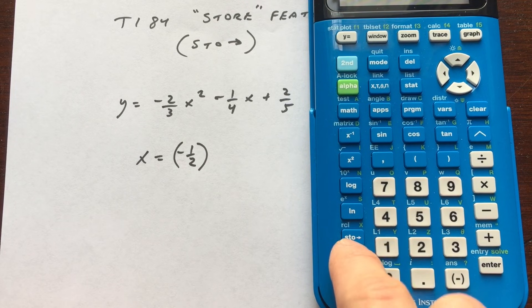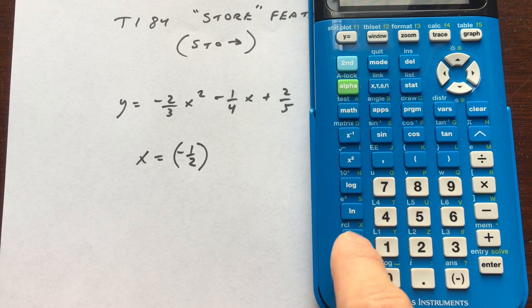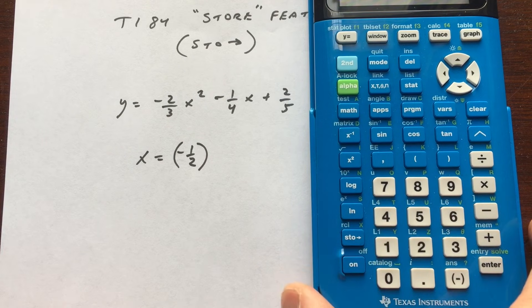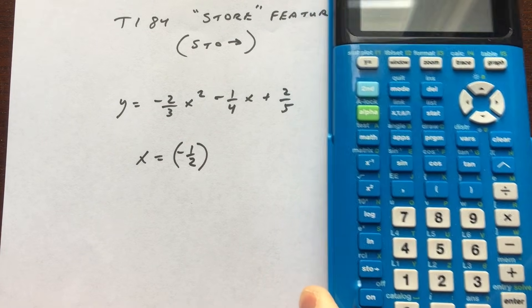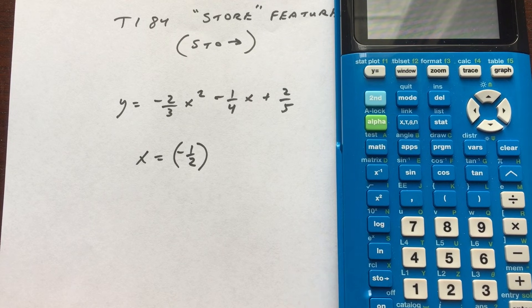Well, you can see here down the left column, near the bottom, STO with the arrow. That means store, and this is a really handy feature, especially when you're doing some more difficult calculations.